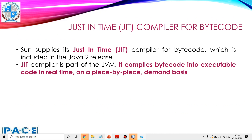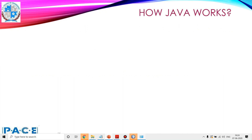What is the just-in-time compiler for bytecode? Sun supplies its just-in-time JIT compiler for bytecode, which is included in the Java release. The JIT compiler is part of the JVM. It compiles the bytecode into executable code in real time on a piece-by-piece demand basis, which improves the time performance of execution of a Java program.